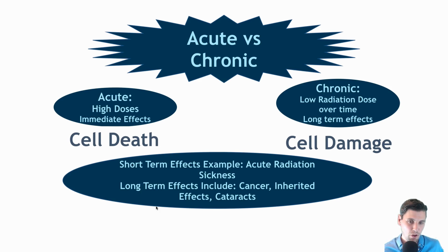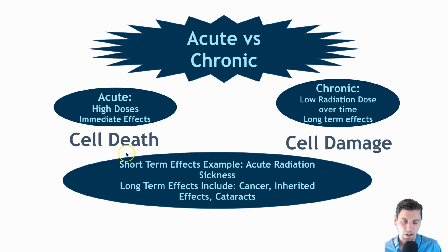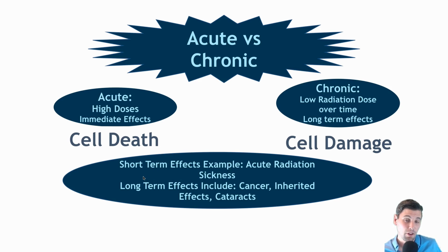We also want to mention acute versus chronic — general terms that are part of the ARRT summary spreadsheet. Acute refers to relatively short periods wherein higher doses are delivered in a short time, with effects typically seen within a few days. Chronic refers to long-term effects that can occur with lower radiation doses or doses given over time. Cell death is primarily caused by higher radiation doses and short-term effects like acute radiation sickness, while long-term effects include cancer, inherited effects, and cataracts — each covered in separate videos.